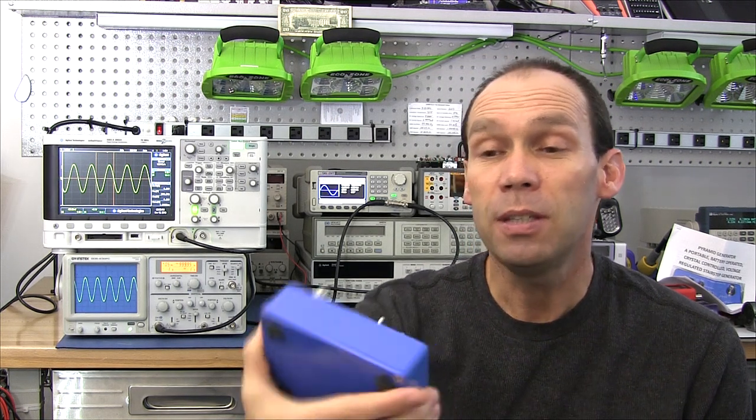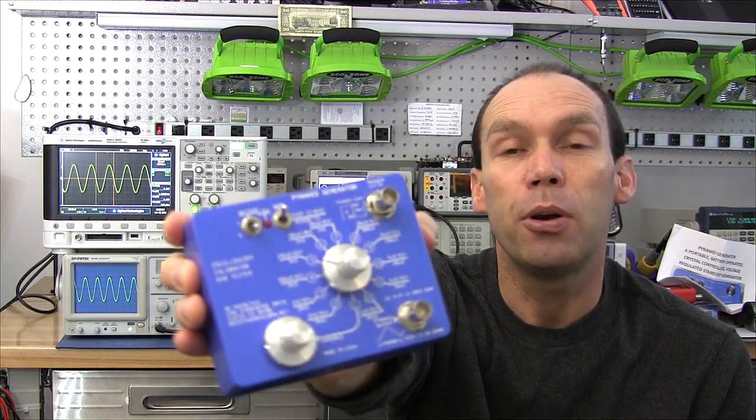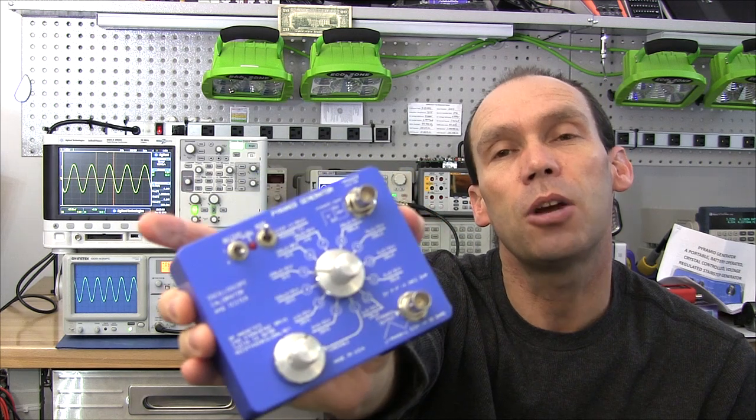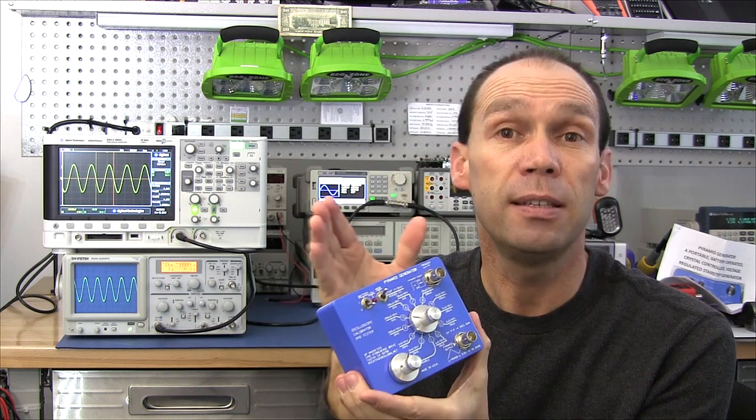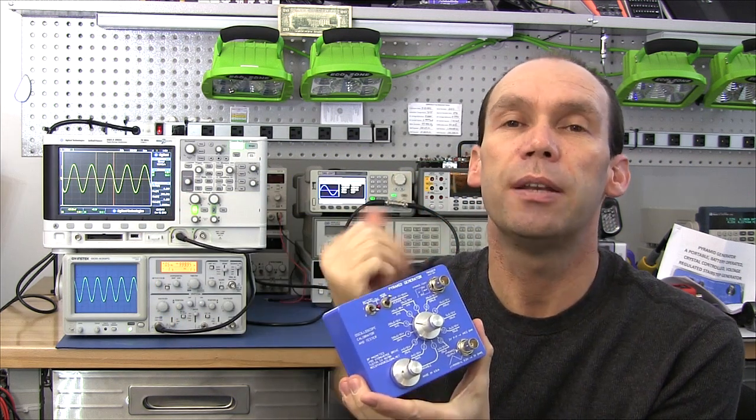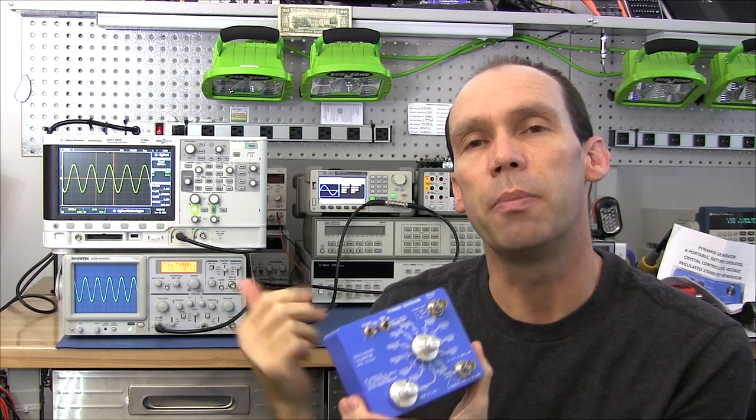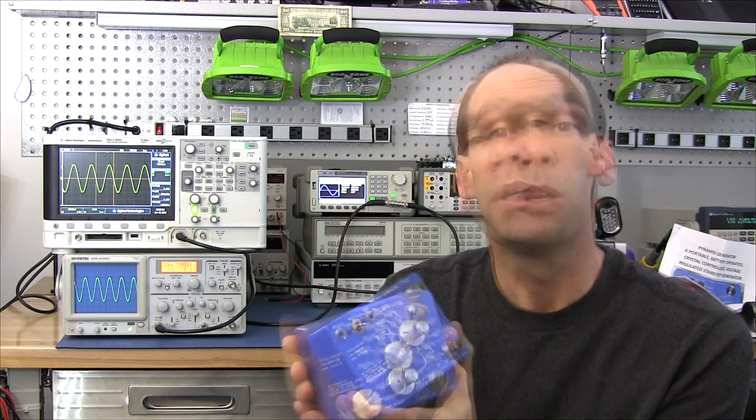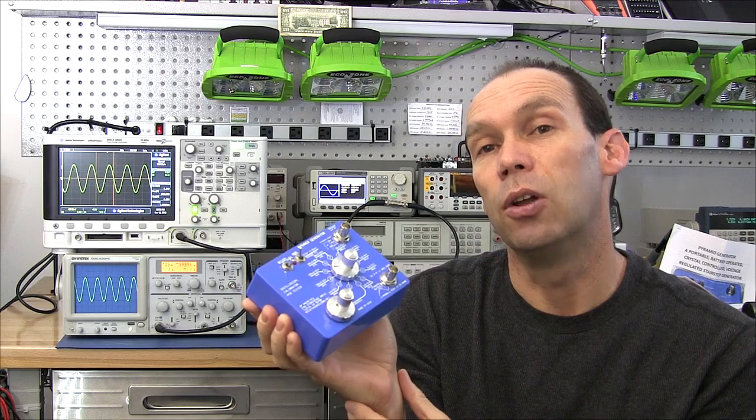Hello YouTubers and welcome to this QuickTech video. In this video we're going to take a look at the pyramid generator or the oscilloscope pyramid generator. This is a device that enables you to send a test signal to your oscilloscope to check the calibration. So we'll put it on the bench and take a closer look.